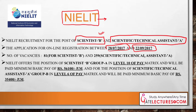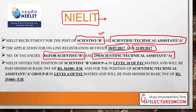The number of vacancies for NIELIT is much higher: 81 vacancies for Scientist B and 259 vacancies for Technical Assistant A. The Technical Assistant A is a lower pay grade compared to Scientist B. NIELIT offers the Scientist B position at Group A with Level 10 of the pay matrix.